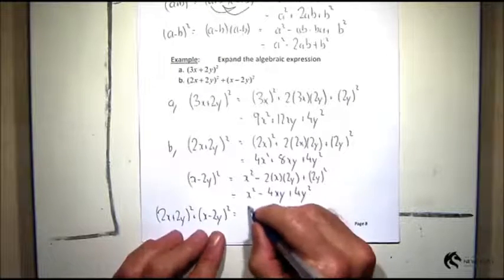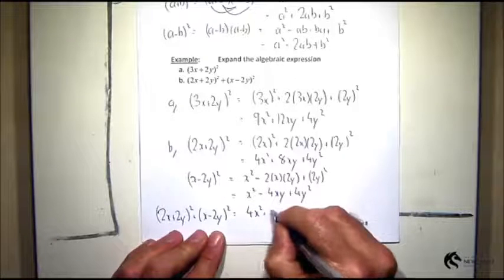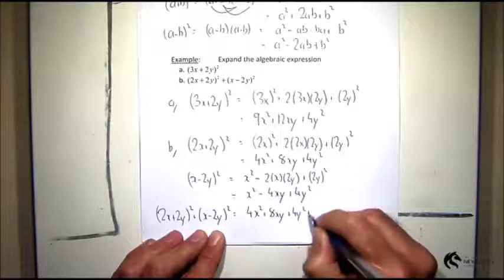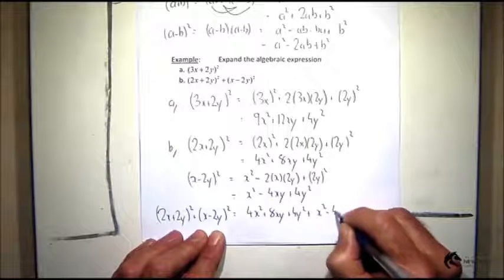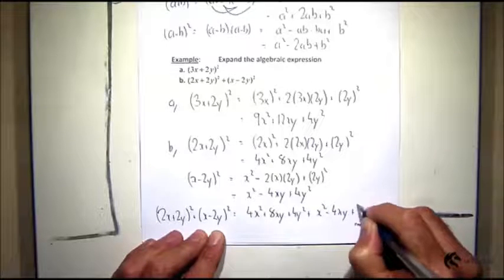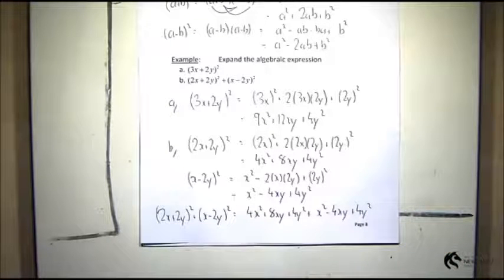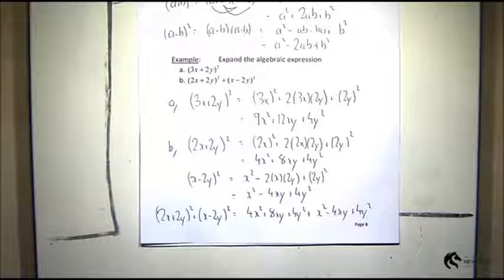And so I will have (2x + 2y)² + (x - 2y)² = 4x² + 8xy + 4y² + x² - 4xy + 4y². So there's my algebraic expression with the grouping symbols expanded out. And now I can collect like terms.